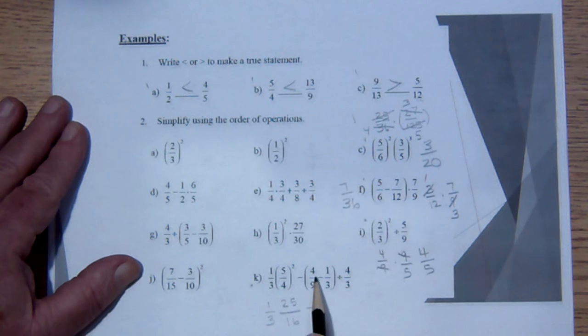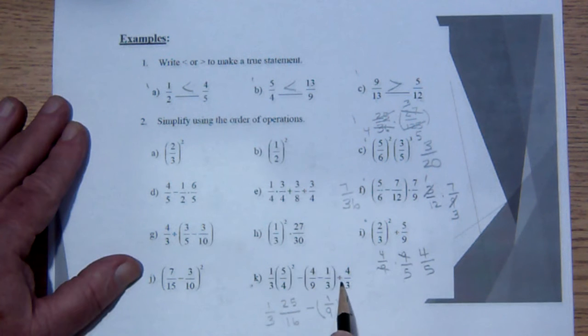And the last example that I'm going to do is the one down here. So here we will get 25 over 16 and that's going to be times 1 third. We will do what's inside parentheses first. That is going to be 4 over 9 minus 3 over 9 is 1 over 9 and we're going to invert and multiply because here we're dividing that is 3 over 4.